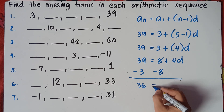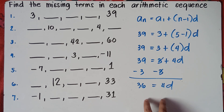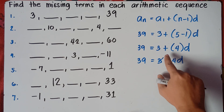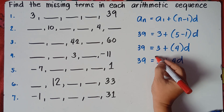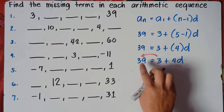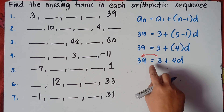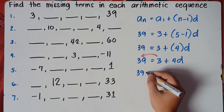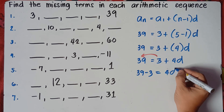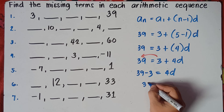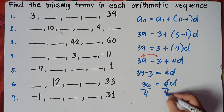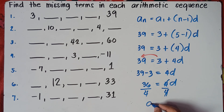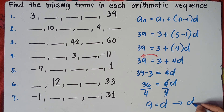So we have 36 equals 4d. You can also simply transpose 3 from right to left — this is positive, so it will become negative. Always remember: once you transfer across the equal sign, you always change the sign. So 39 minus 3 equals 4d, which gives 36 equals 4d. To get the value of d, divide both sides by 4. So d equals 36 divided by 4, which is 9. The common difference is 9.